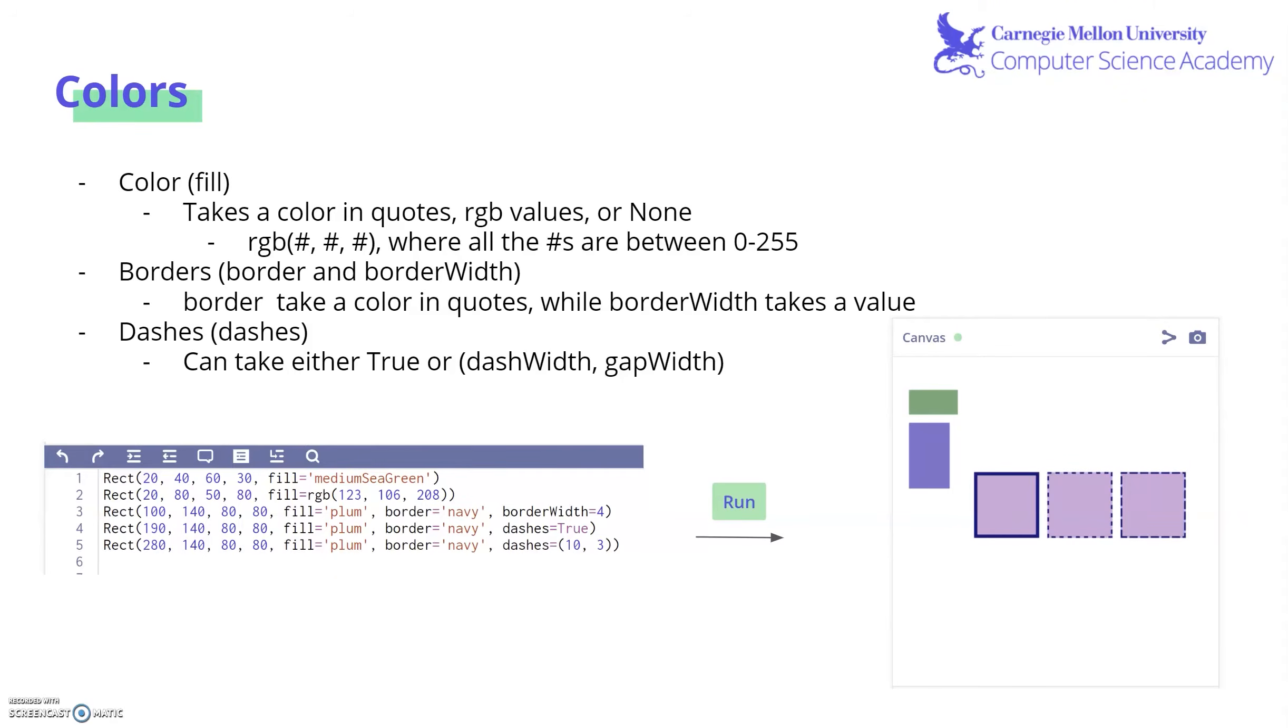Once we can draw a rectangle, we can actually start adding colors and other interesting features to our drawings. First is color, or fill. Whenever we want to add color, after we put all the basic points in for our shape, we can have fill equals, and then one of three options. Either we could have a color in quotes, RGB values, or none, which means that the fill is see-through, transparent. RGB values are always written like this: RGB parentheses, and then three numbers separated by commas, where the numbers are all between 0 and 255.